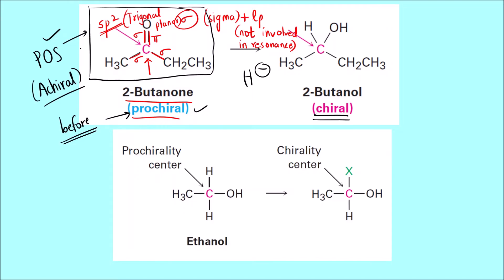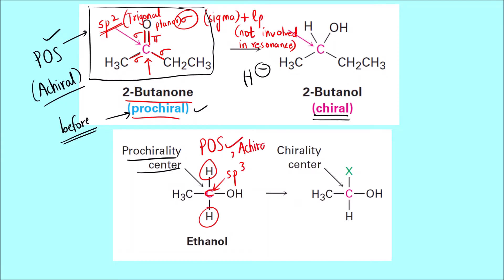Similarly, a prochiral center can also be an sp3 hybridized carbon. Here there are four sigma bonds so this is sp3 hybridized. It is achiral because two groups are the same, so a plane of symmetry is present. But if we do a substitution reaction and replace one hydrogen with another group, it becomes chiral — that is why this is also called a prochiral center.